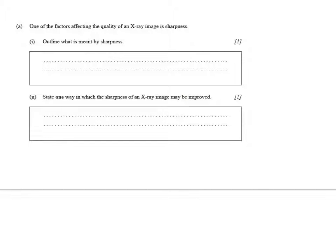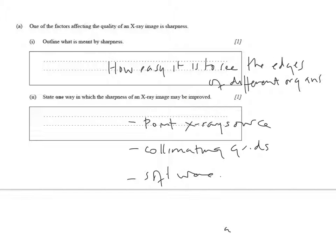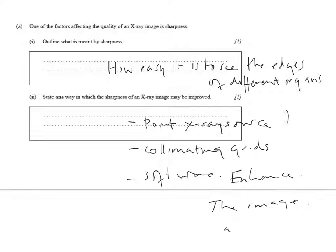Have a go at this past paper question and check the answers by playing the video. What do we mean by sharpness? How easy it is to see the edges of different organs. And how can you increase the sharpness of an x-ray image? By using point x-ray sources, by using collimating grids, or — and this is a new one — by using software to enhance the image. That's on the mark scheme, so we'll use it. Remember, some of the other things we mentioned are specifically about contrast, so you've got to be careful with what the question's about.